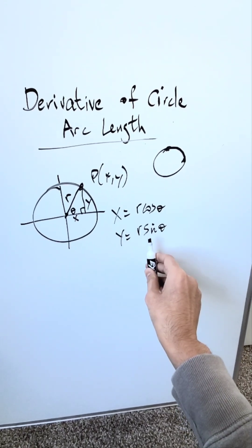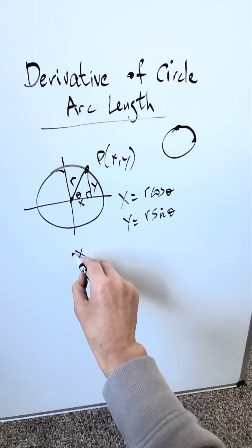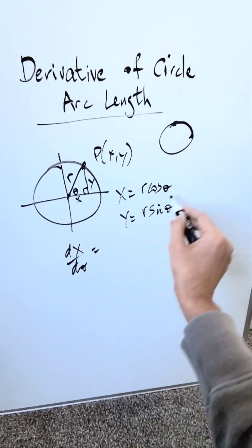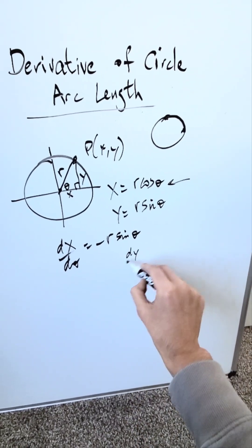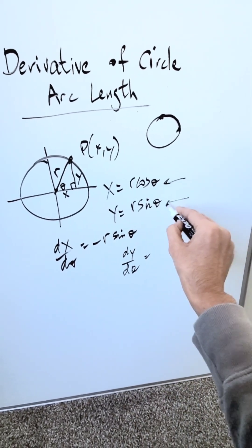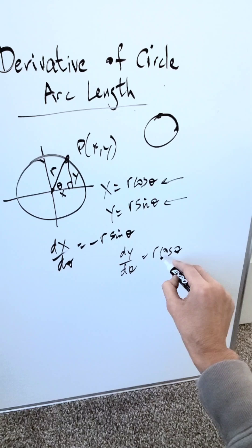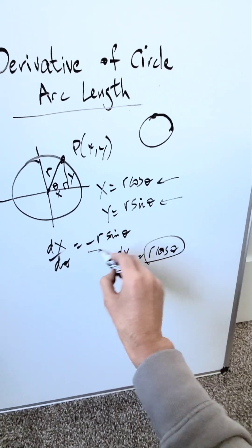Now I'll take the derivative with respect to the θ variable. The derivative of r cos θ will be -r sin θ. The derivative dy/dθ will be r cos θ. Now I have both derivatives - what do I do with them?